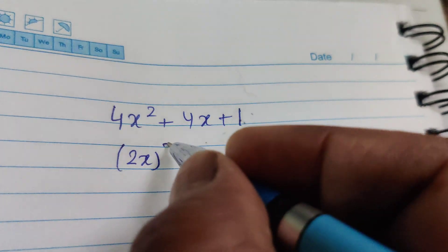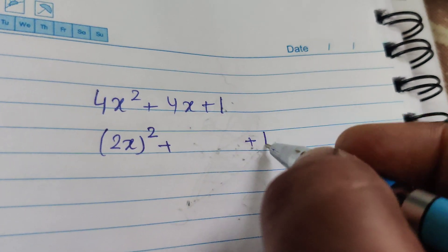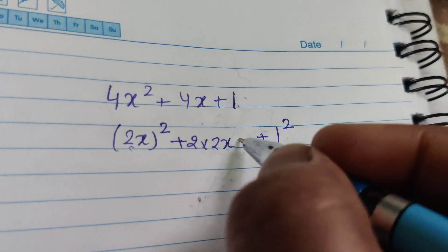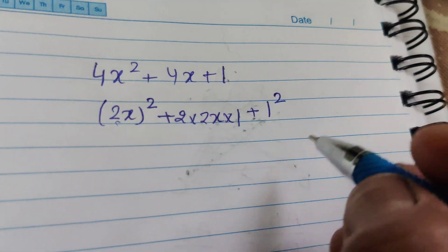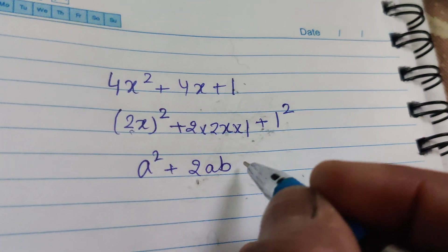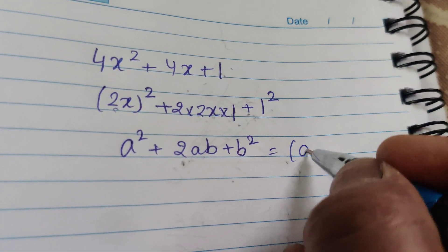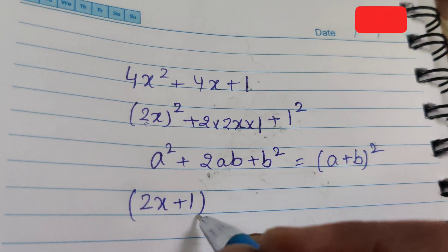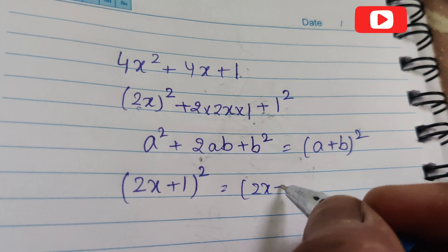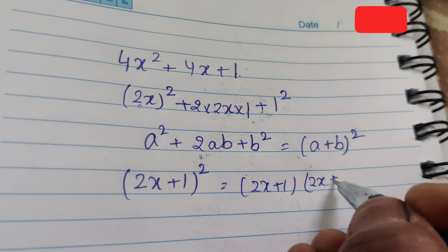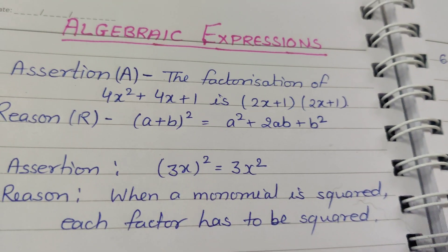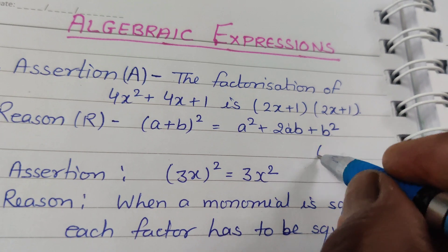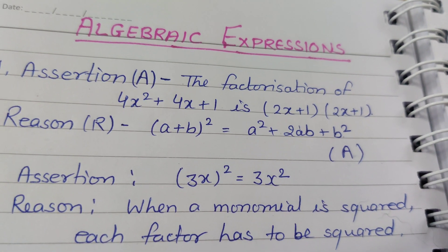Using the identity, we write it as (2x)² + 2×(2x)×1 + 1², where a = 2x and b = 1. This equals (a+b)² = (2x+1)². So the factorization is (2x+1)(2x+1). Both assertion and reason are true, and reason is the correct explanation — answer is A.